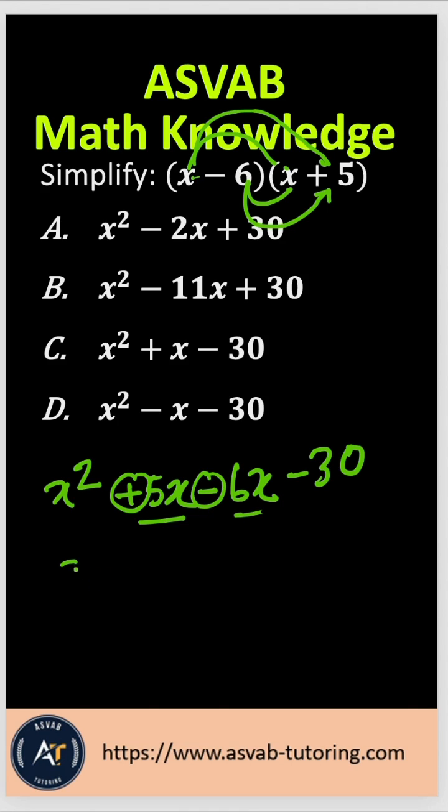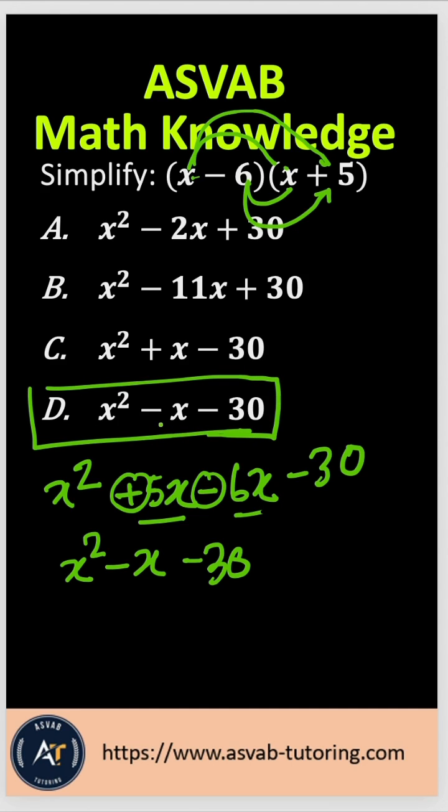That gives you x squared minus x minus 30. So the correct answer is option D. Make sure you practice this type of question over and over again. You'll definitely see this type of problem on your ASVAB test.